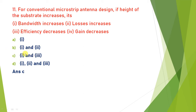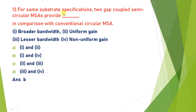For the same substrate specification, two gap coupled semi-circular MSA provides broader bandwidth compared to conventional circular MSA, as well as non-uniform gain. Options one and four are correct, so the answer is B.